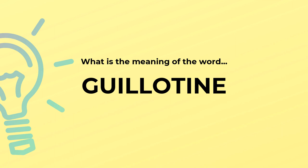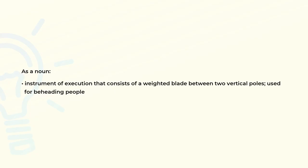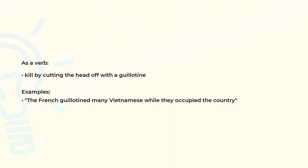What is the meaning of the word guillotine? As a noun: an instrument of execution that consists of a weighted blade between two vertical poles, used for beheading people. As a verb: to kill by cutting the head off with a guillotine.